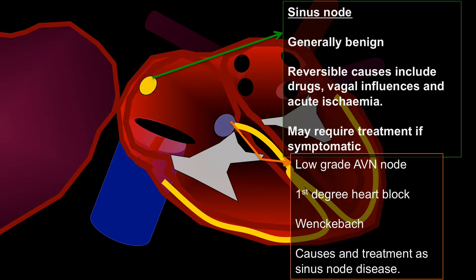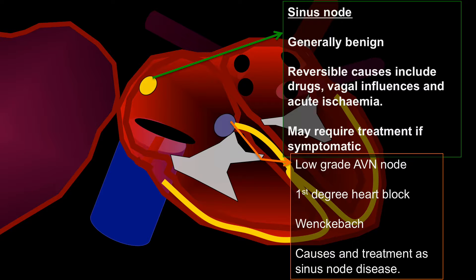When we come to the AV node we split this up into the three degrees of heart block. First degree heart block where the PR interval lengthens, or second degree heart block where you have Wenckebach, is seen as low grade AV nodal disease and very much like sinus node disease is often benign and really only requires treatment if symptomatic. Again there can be reversible causes, and in the example of inferior myocardial infarction there is a branch to the AV node from the right coronary artery, so again in inferior MI this should always be looked for.